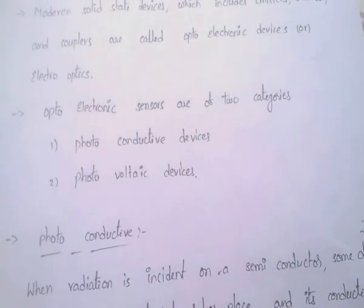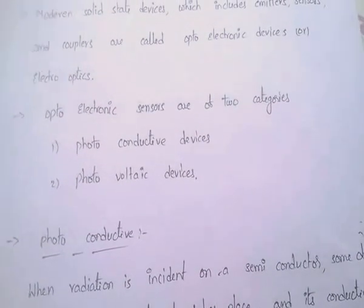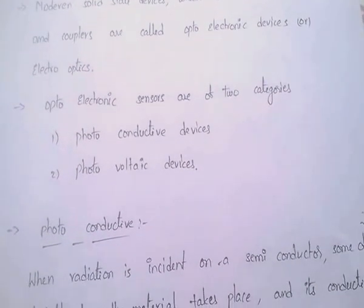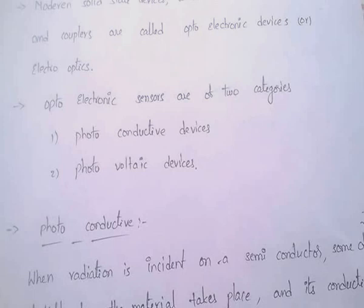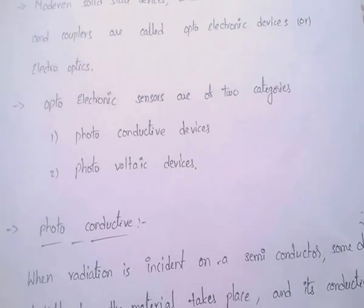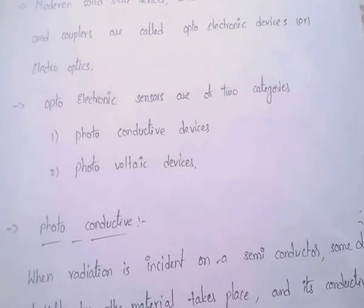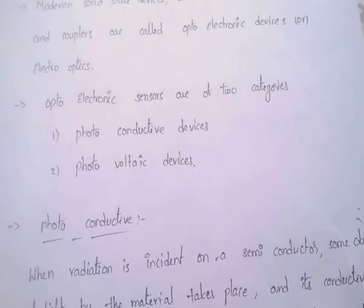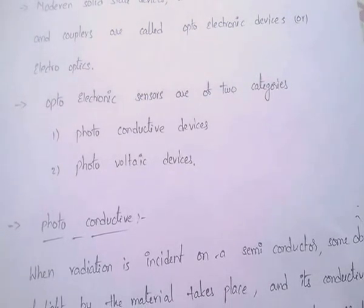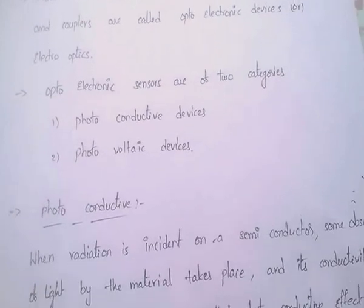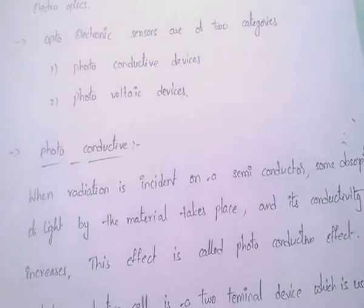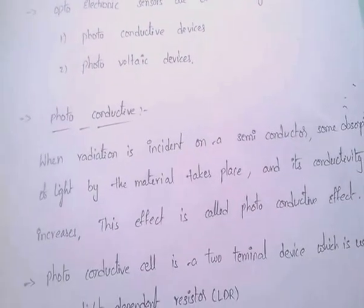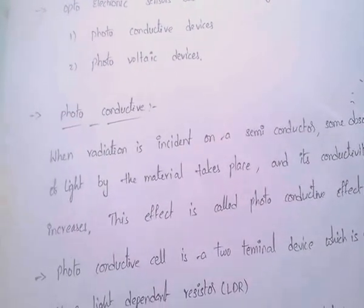First category: photoconductive devices. Second category: photovoltaic devices.